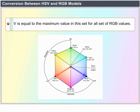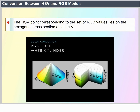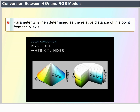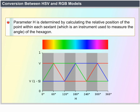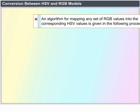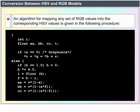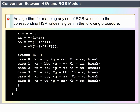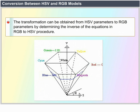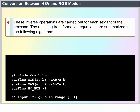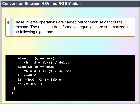For any set of RGB values, V is equal to the maximum value in the set. The HSV point corresponding to the set of RGB values lies on the hexagonal cross-section at value V. Parameter S is then determined as the relative distance of this point from the V axis. Parameter H is determined by calculating the relative position of the point within each sextant of the hexagon. An algorithm for mapping any set of RGB values into the corresponding HSV values is given in a procedure. The inverse transformation from HSV parameters to RGB parameters is carried out for each sextant of the hexagon.